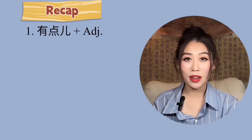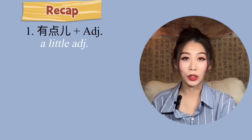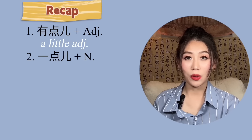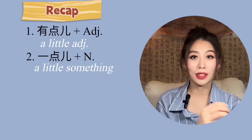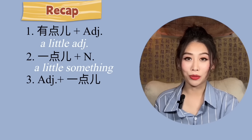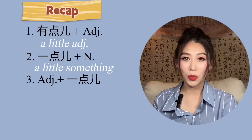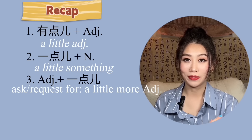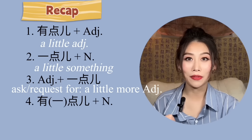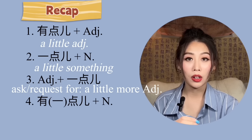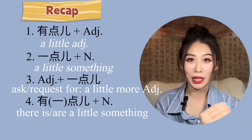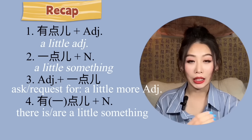Now let's do a quick recap. Number one: 有点儿 with an adjective means 'a little adjective.' Number two: 一点儿 with a noun means 'a little something.' Number three: adjective + 一点儿 — when you want to ask or request a little bit more. Number four, the confusing one: 有点儿 or 有一点儿 with a noun means 'there is a little something' or 'have a little something.'